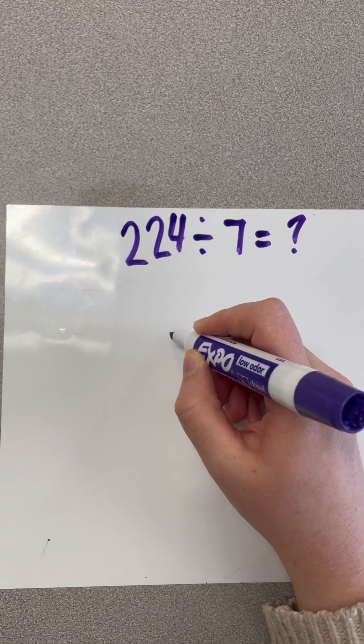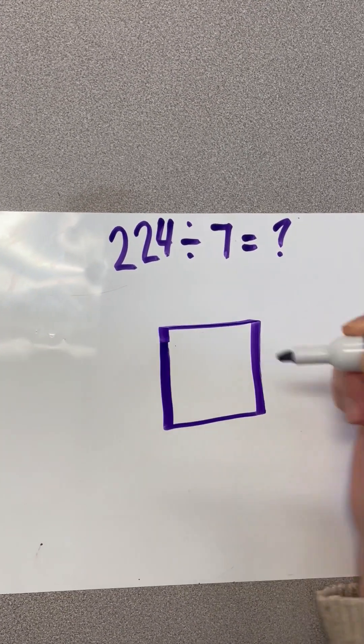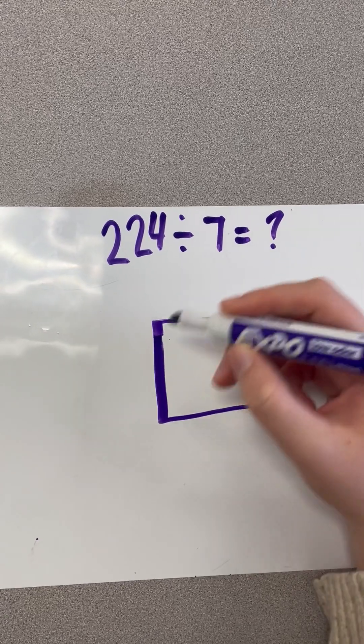So when we have a division problem, I'm going to go ahead and just draw that box that will represent our area model.